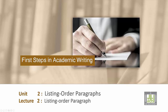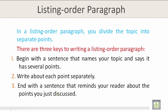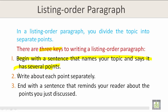Part 1: Organization. In a listing order paragraph, you divide the topic into separate points. There are three keys to writing a listing order paragraph. Key number one: begin with a sentence that names your topic and says it has several points. Key number two: write about each point separately. Key number three: end with a sentence that reminds your reader about the points you've just discussed.